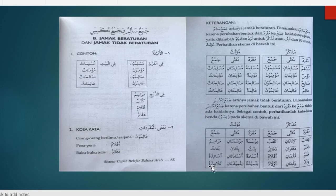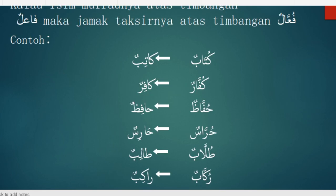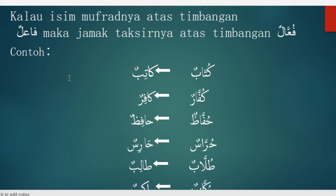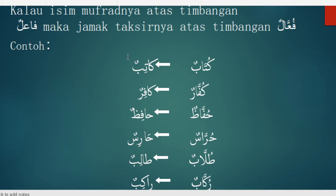Sebenarnya ada kaidah yang bisa kita ambil. Di antaranya beberapa rumus dari Jama' Taksir, kita bisa lihat di sini. Jadi kalau isim mufradnya atas timbangan Fa'ilun, maka Jama' Taksirnya atas timbangan Fu'alun. Contohnya seperti Katibun — artinya penulis, seorang penulis. Katibun ala wazni Fa'ilun, maka Jama' Taksirnya atas timbangan Fu'alun, jadi Katibun menjadi Kuttabun.